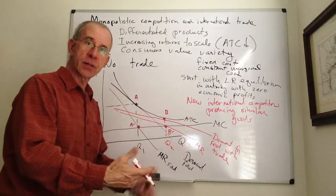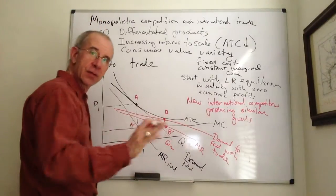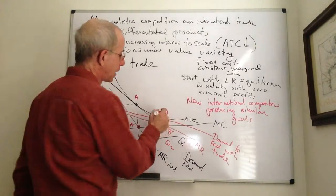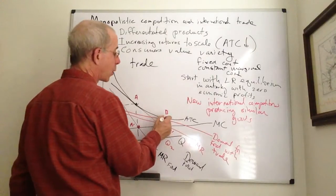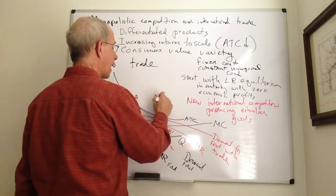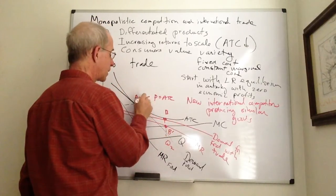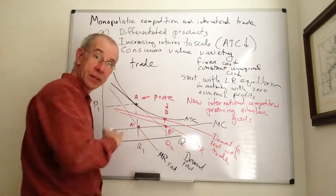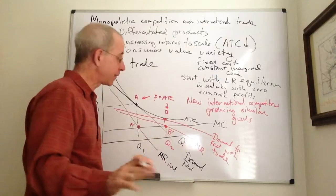International competitors come in. After everything sorts out, there is going to be a new equilibrium where price equal to average total cost at point B, just like it is at point A. So, there's zero economic profits.